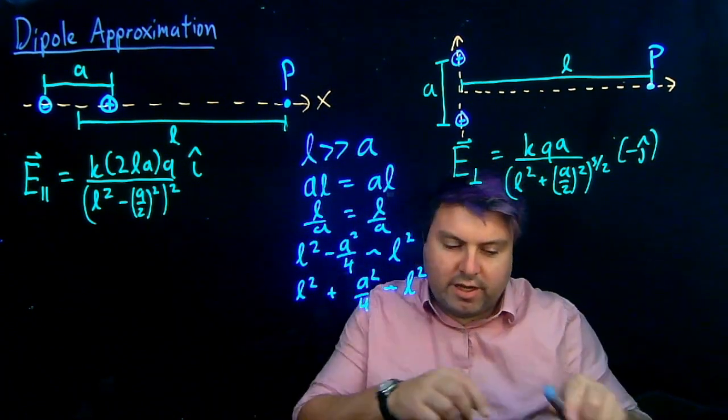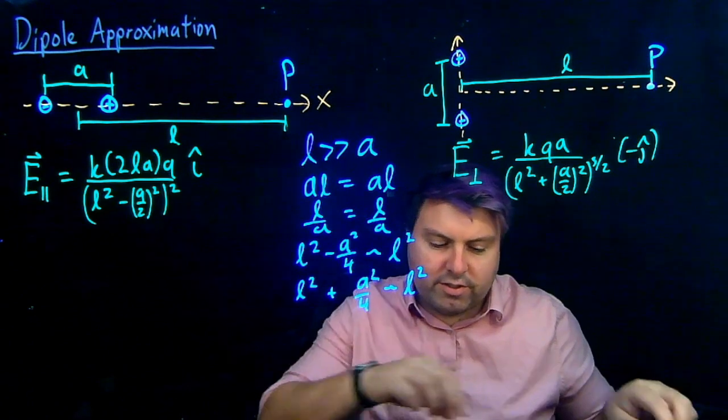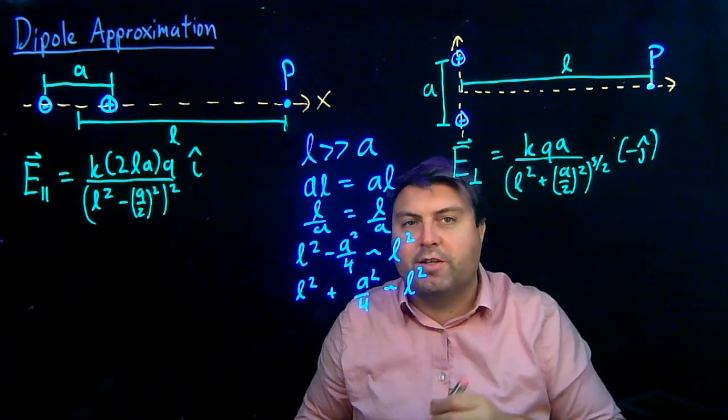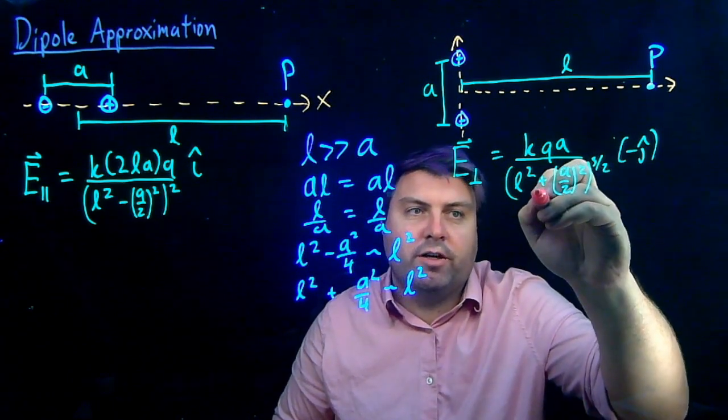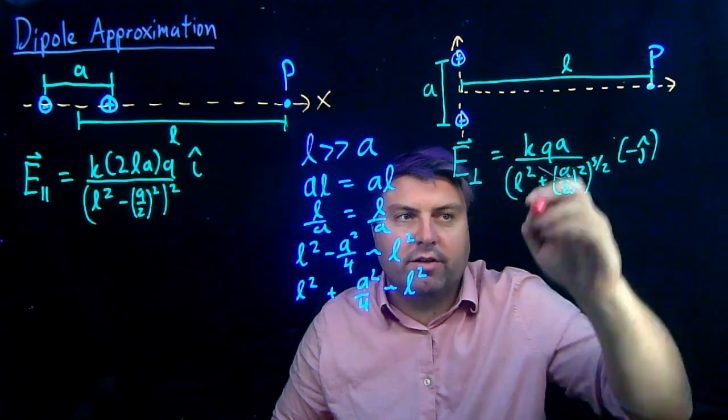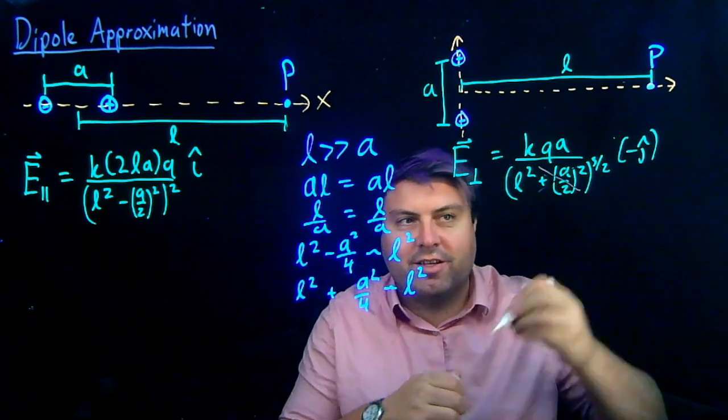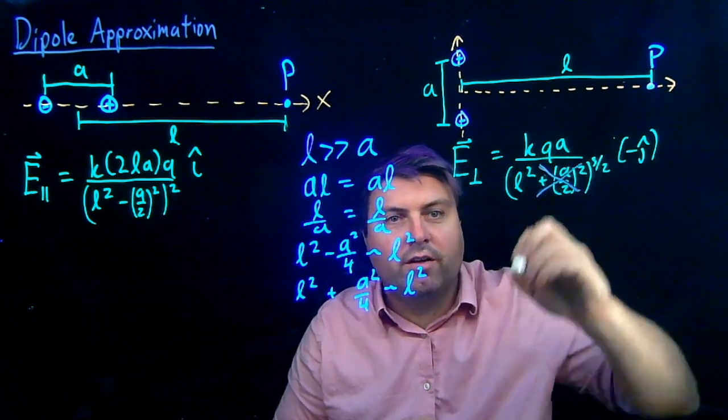So, what we can do is we can take a look at each of these equations and simplify them a bit. So, since I'm over here, let's do this. So, L squared plus A over 2 squared, we can kind of just cross out to some degree, once I get a pen that works for me, this part.